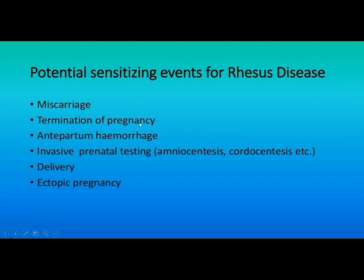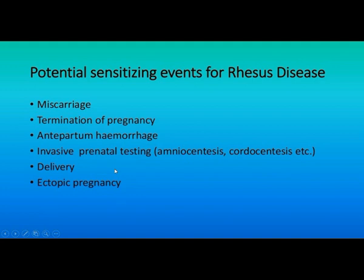The potential sensitization events of Rhesus disease are mainly miscarriage, termination of pregnancy, antepartum hemorrhage, and invasive prenatal testing such as amniocentesis and cordocentesis. At those times there is a chance of pricking and fetal-maternal transfusion occurring. At the time of delivery when placental separation occurs, and also in ectopic pregnancy, there is a chance of transfer of fetal RH positive cells to the mother's RH negative bloodstream, sensitizing the mother's body.